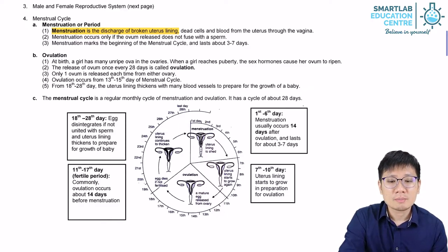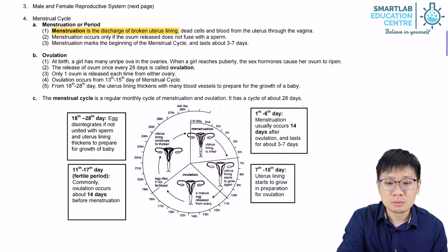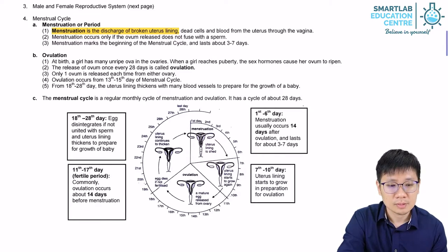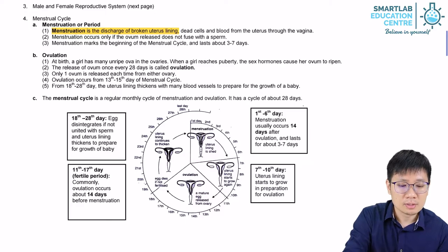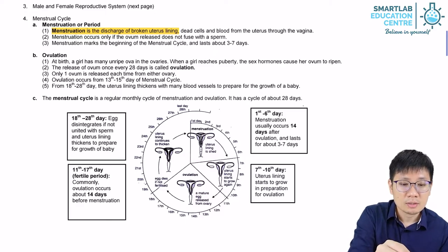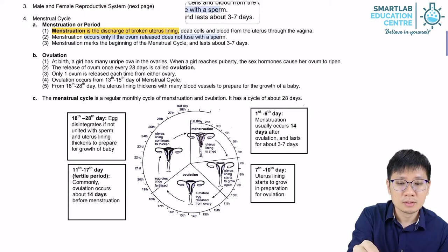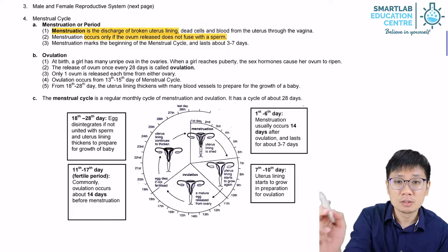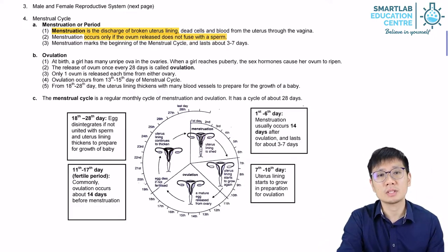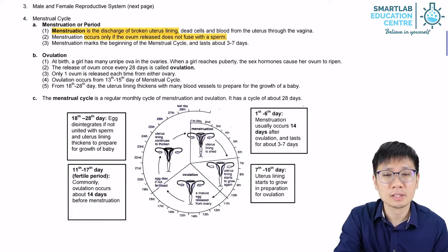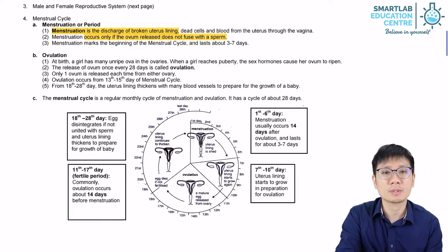The passage of the menstrual flow is through the vagina. Menstruation only occurs if the ovum that was released during that particular cycle did not get fertilized by a sperm cell.